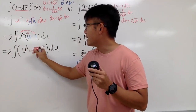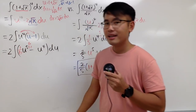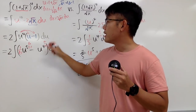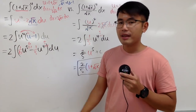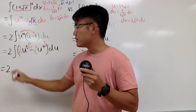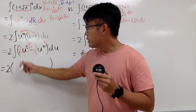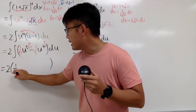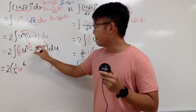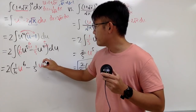Integrating term by term: for u to the fifth, add 1 to get power 6, divide by 6; for u to the fourth, add 1 to get power 5, divide by 5. So the result is 2 times the quantity (1 over 6 times u to the sixth power minus 1 over 5 times u to the fifth power).